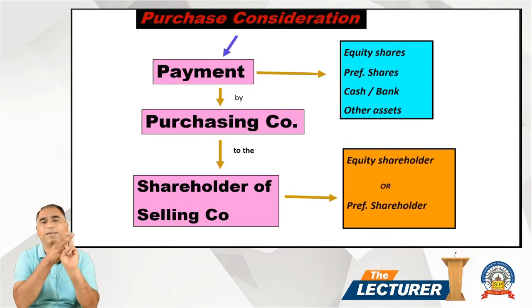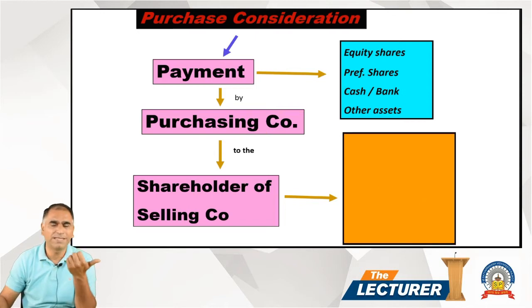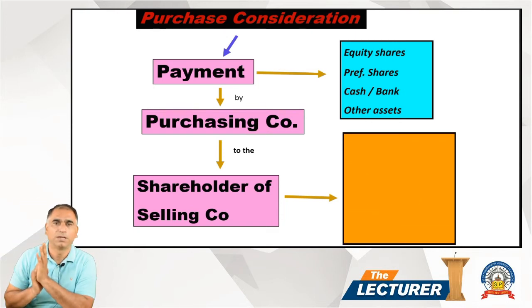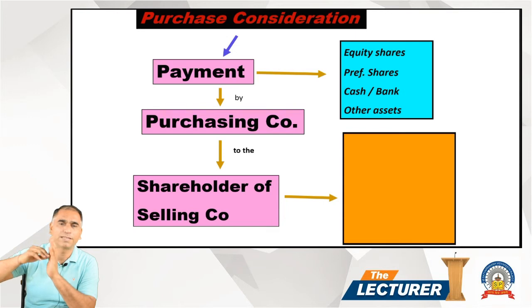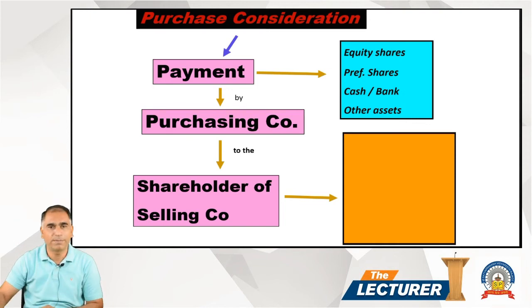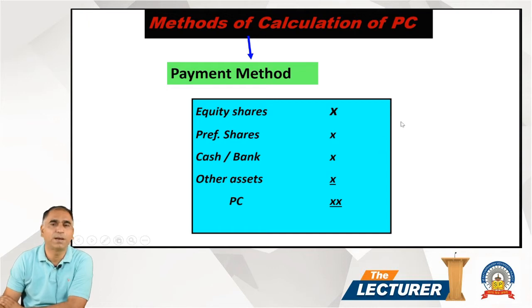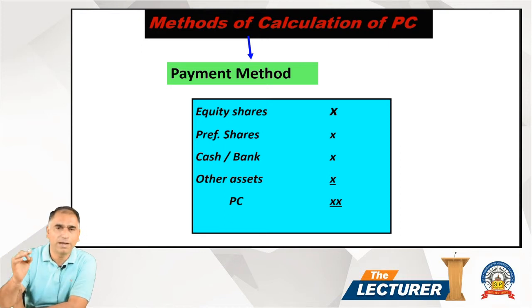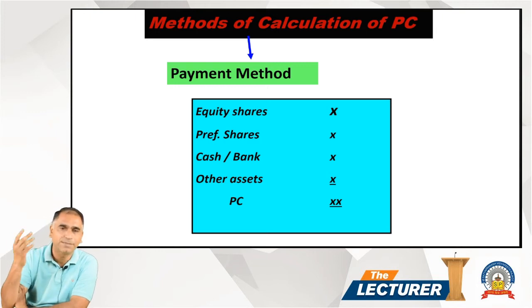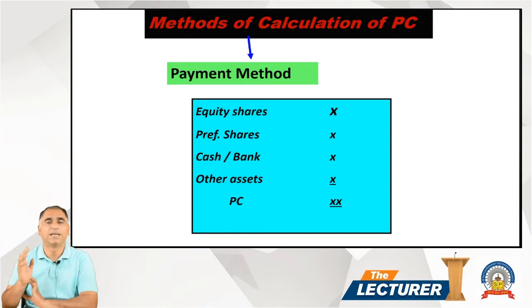PC can be calculated in two ways. The first method is the payment method: take the sum total of everything given by the purchasing company to the shareholders of the selling company - equity shares, preference shares, cash, debentures, etc. - and the total of all that would be the PC. This is called the payment method.